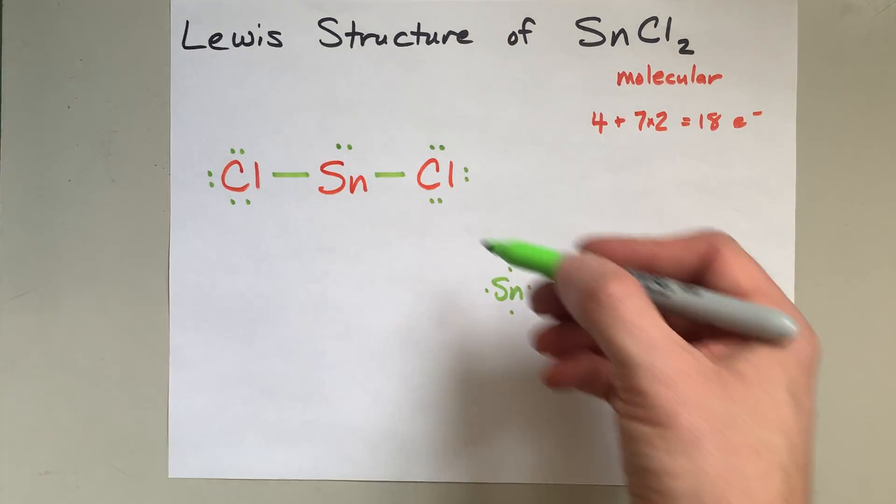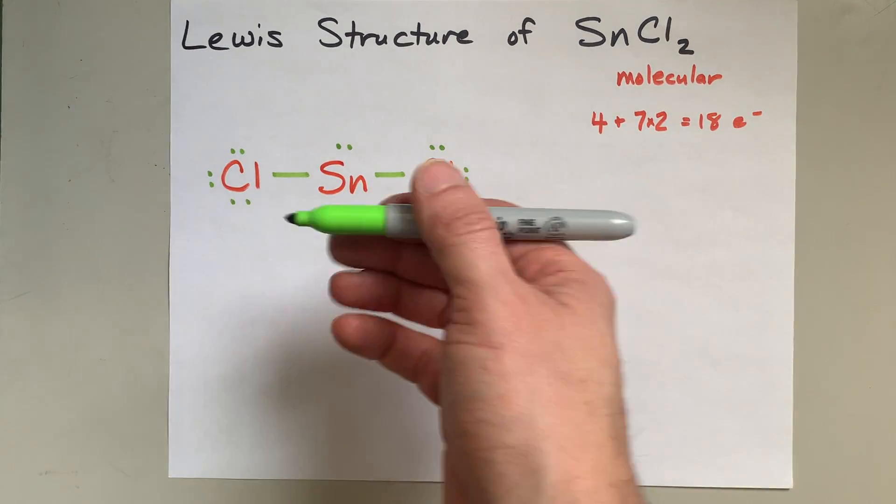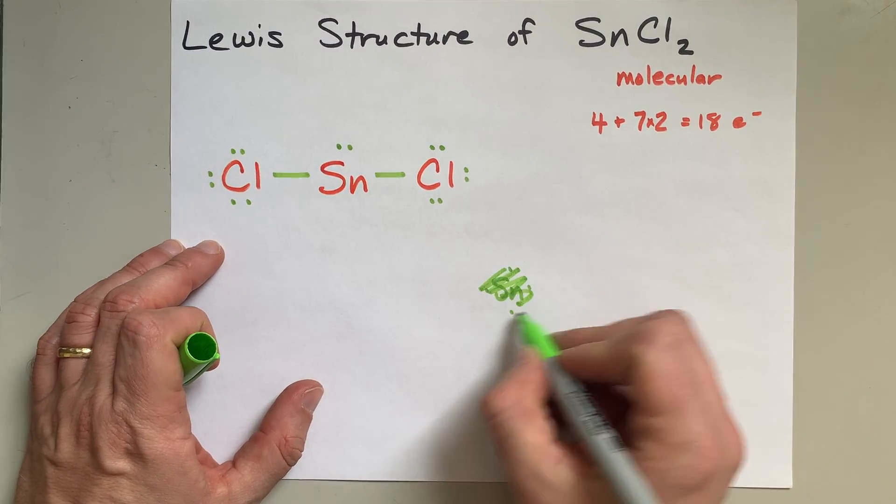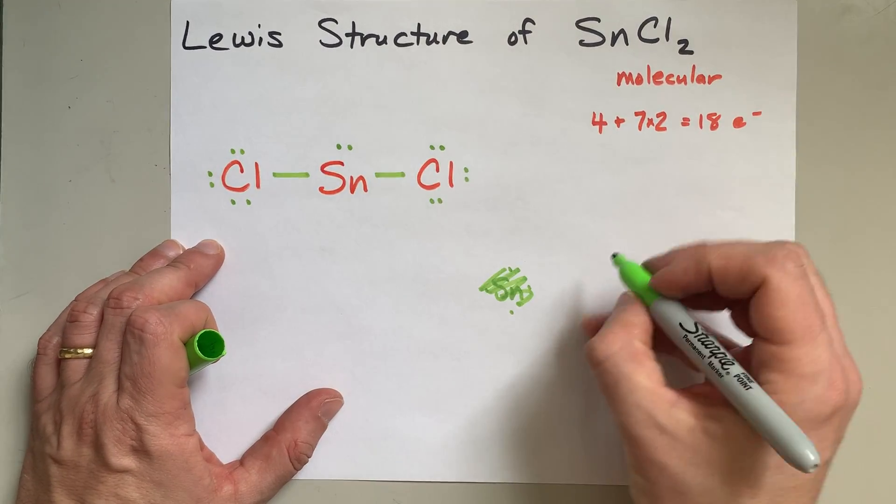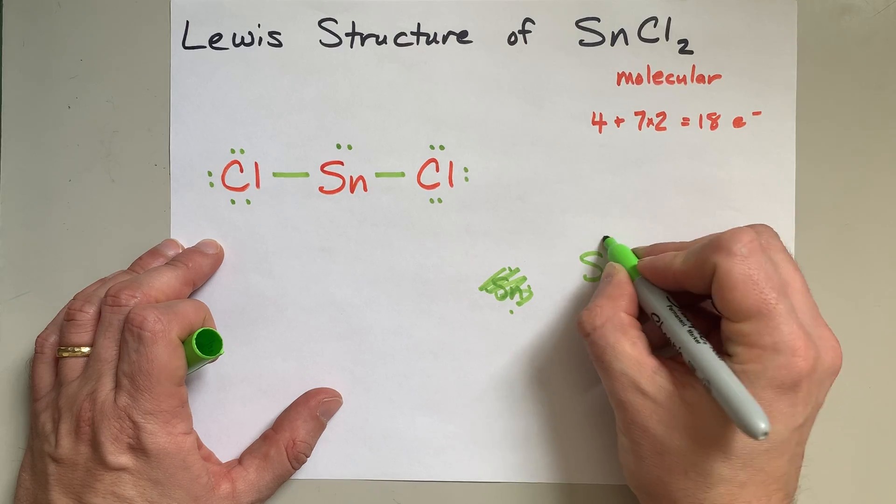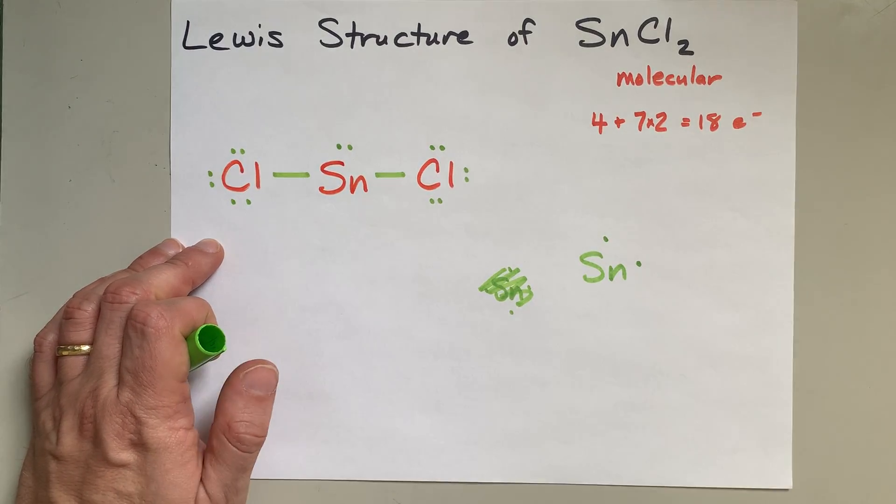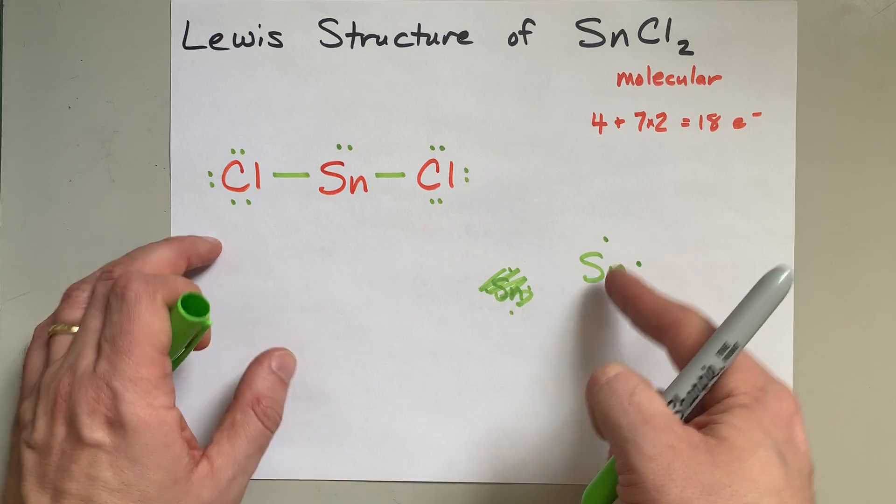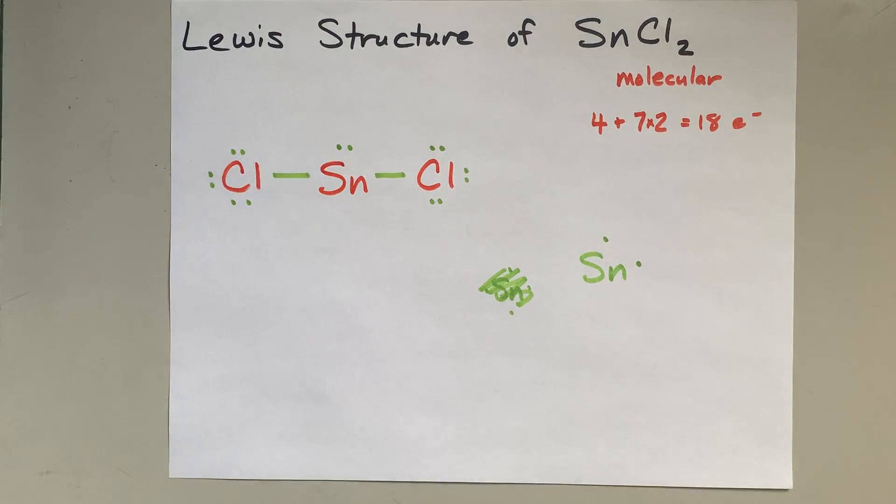It's going to be so tough to do, because there's a lone pair on tin, unless you don't know that that exists. If your teacher is demanding an ionic structure for this, I want you to start with tin having two valence electrons, because that's the valence of tin, if you're going to consider this ionic.